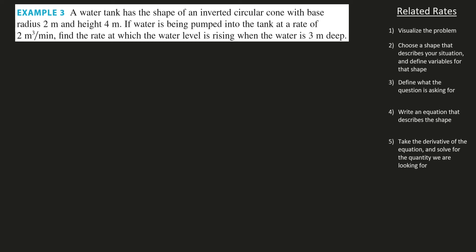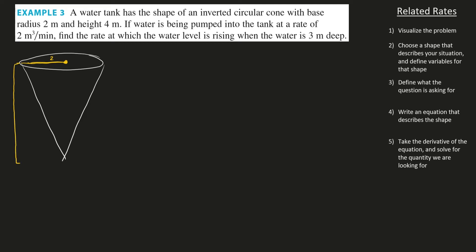The circular tank problem is a related rates problem that really shows how difficult these things can get. A water tank has the shape of an inverted circular cone with a base radius of 2 and a height of 4. Water is being pumped into the tank at a rate of 2 meters cubed per minute. Find the rate at which the water level is rising when the water is 3 meters deep.